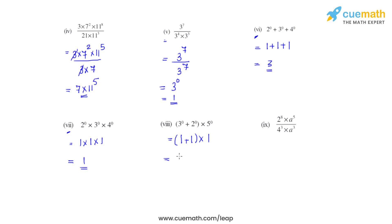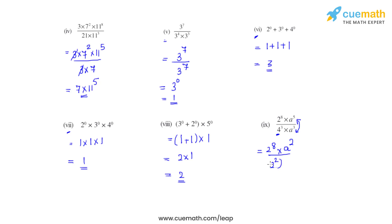In the ninth bit, we have 2 raised to 8, times a raised to 5, and a raised to 3 in the denominator. So a raised to 5 divided by a raised to 3: using the quotient law, we keep the same base and subtract the powers, giving a raised to 2 in the numerator. For 4 raised to 3 in the denominator, since 4 equals 2 raised to 2, we write it as 2 raised to 2, whole raised to 3.